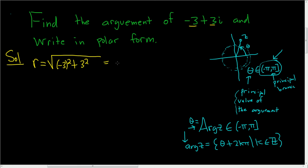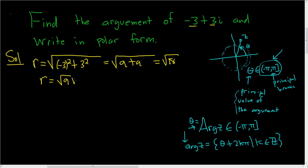Negative 3 squared is 9, so this is 9 plus 9, which gives the square root of 18. We can factor 18 as 9 times 2, and the square root of 9 is 3, so the modulus is 3 square root of 2.